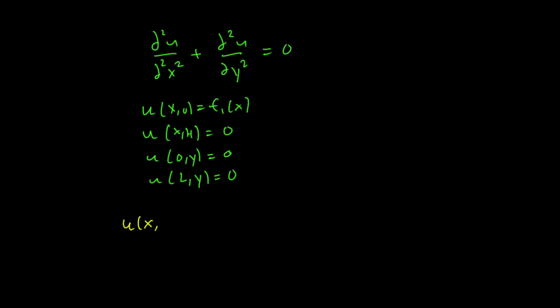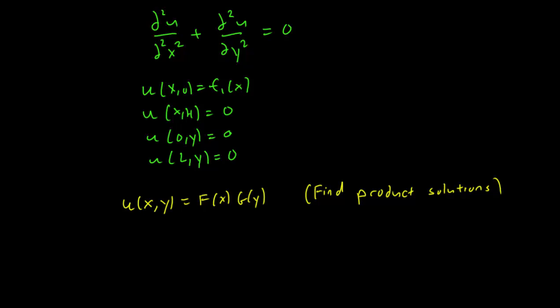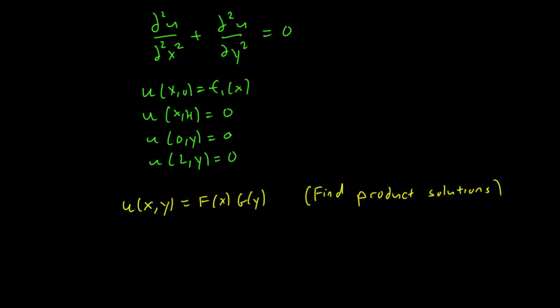u equals f times g. So again, not all the solutions of this equation will be a product solution, but this gives us a place to start. By plugging this f in the Laplace equation, we get that g(y) times the second derivative of f(x) plus f(x) times the second derivative of g(y) is equal to zero.